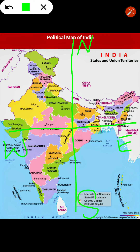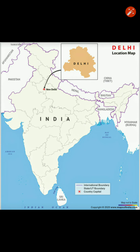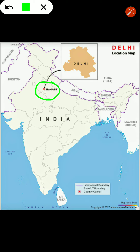Now, referring to your book, page number 8, chapter 1, you have to locate states. The first state you have to locate is Delhi, the capital of India. This is the location of Delhi — you can see it is towards the center. You have to magnify and see how Delhi looks like, and locate Delhi here.